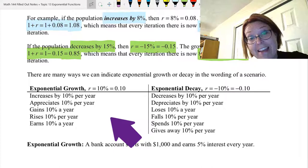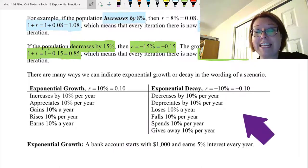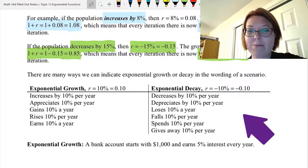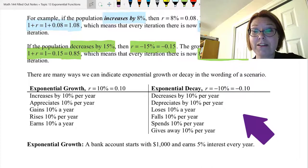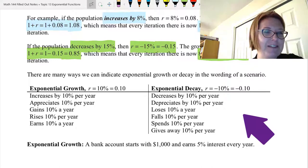For exponential decay, that would be an r of negative 10% or negative 0.10. We could phrase this as it decreases by 10% per year, it depreciates by 10% per year, it loses 10% a year, falls 10% a year, spending 10% a year, giving away 10% a year, etc.